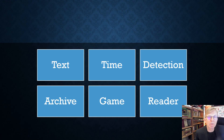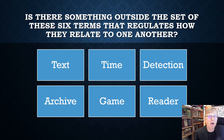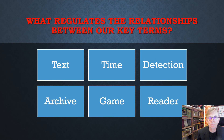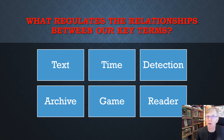I hope by now that you'll have come to appreciate the connections between these six key terms that I outlined in the first part of this introduction. The question remains, though, whether there's something beyond them that determines how we connect them. This is the question that we'll be exploring in the next stage of our investigation of investigation — our detection of detective fiction, following the tracks of how it works. Is there something beyond these six terms that determines how we connect them?